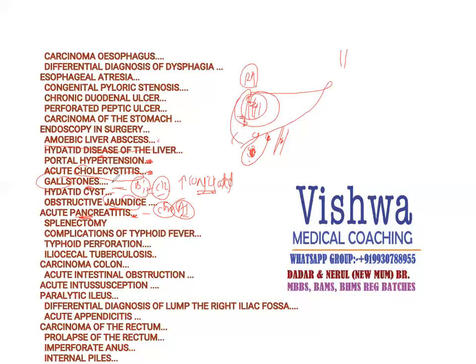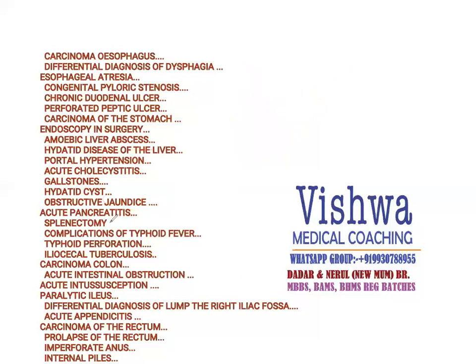In viva or theory, they may also ask about indications of splenectomy. These include massive splenomegaly, chronic malaria, hemorrhagic diseases, thalassemia, and sickle cell anemia, in which we can go for splenectomy.